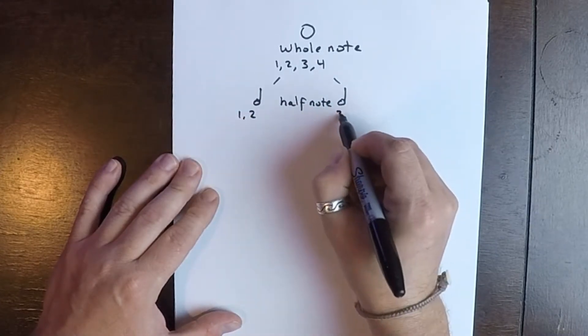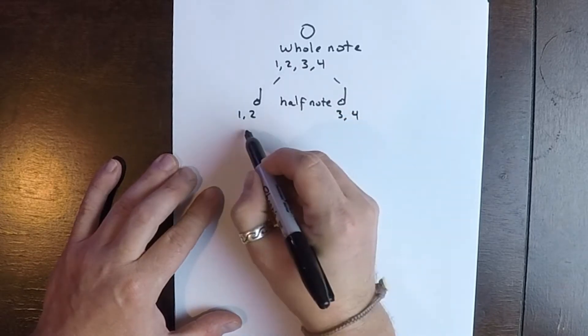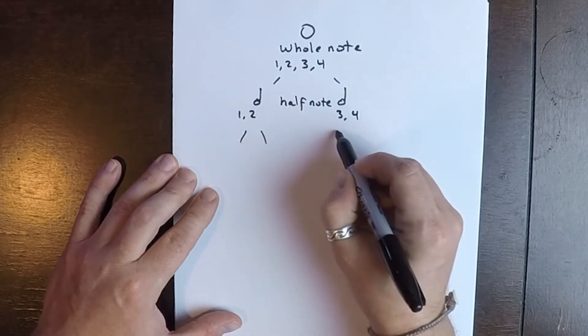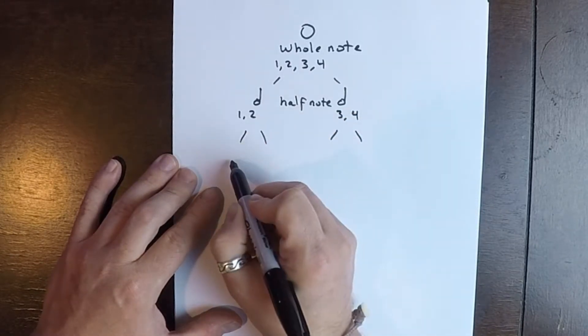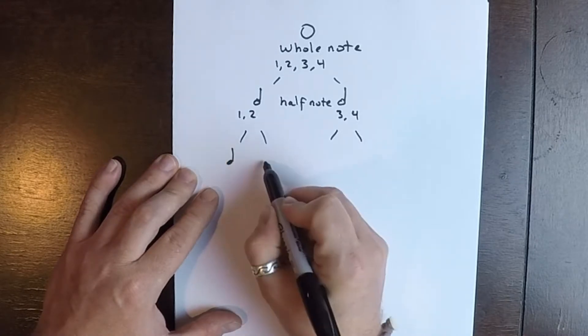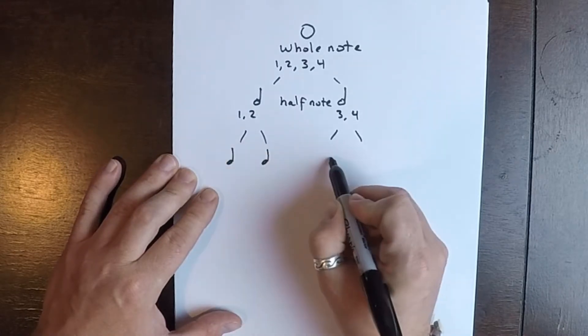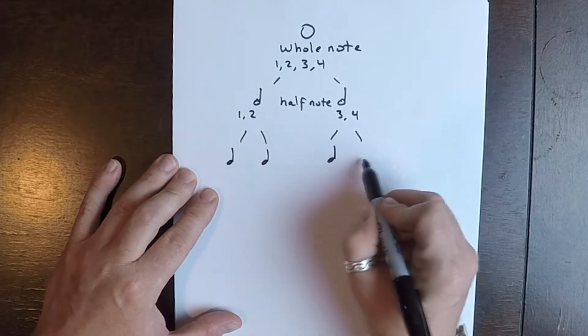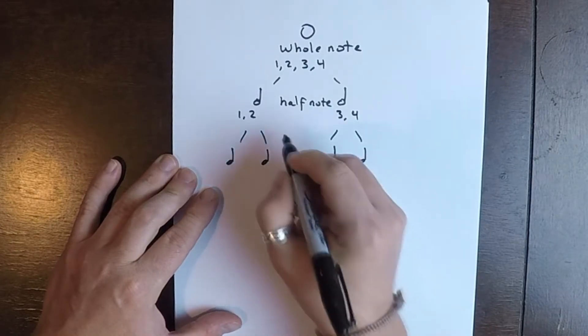Those get counted one, two, or three, four. Now the half note will break down into quarter notes.